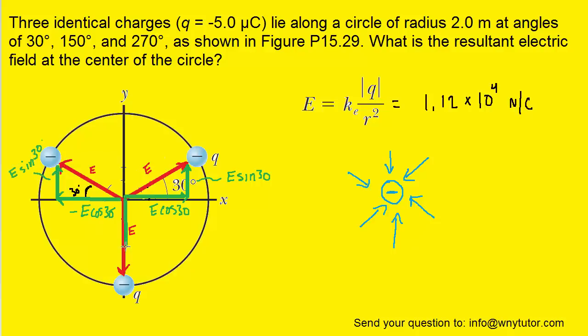For the third electric field we have only a y component, because it's pointing exclusively along the y axis. So there is no x component. We should note however that because it's pointing straight down the y axis, its value will actually be negative E. So that would represent the y component of that vector, and again there is no x component.